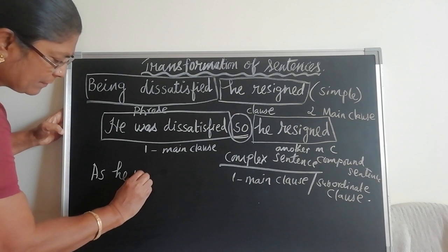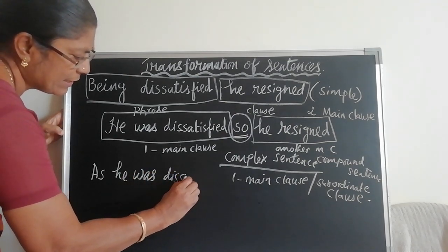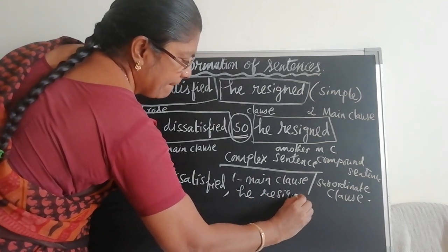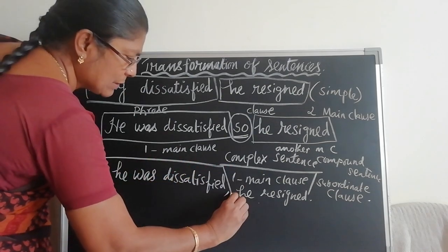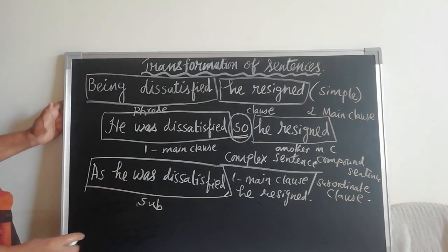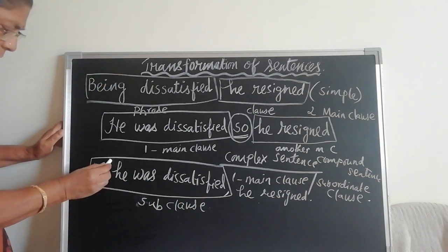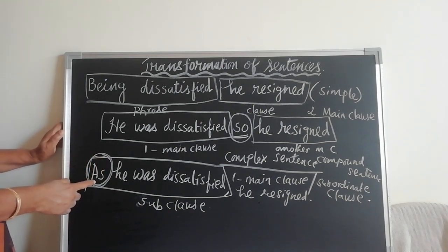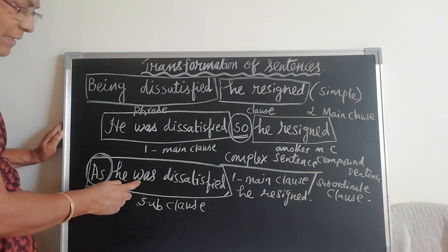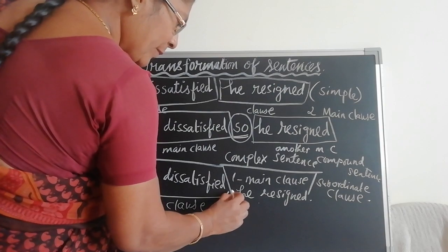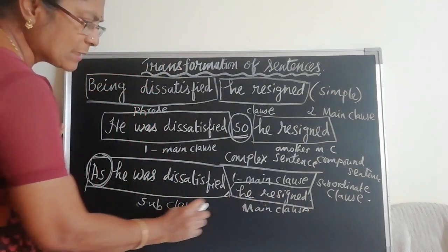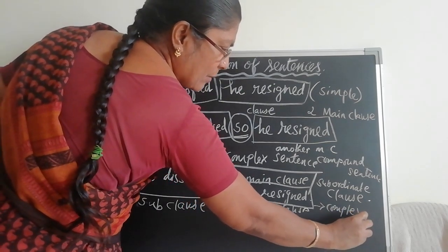'As he was dissatisfied, he resigned.' Here, 'as he was dissatisfied' is a subordinate clause, and 'he resigned' is the main clause. Subordinate clause with main clause — so it is a complex sentence.